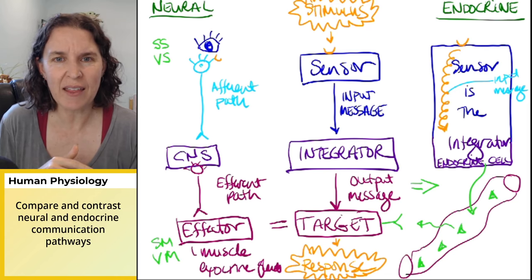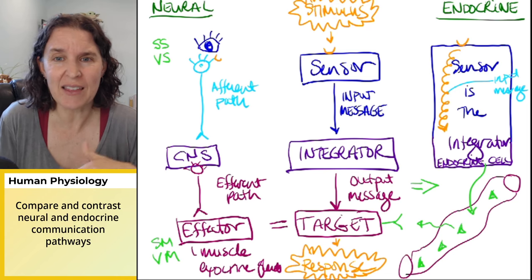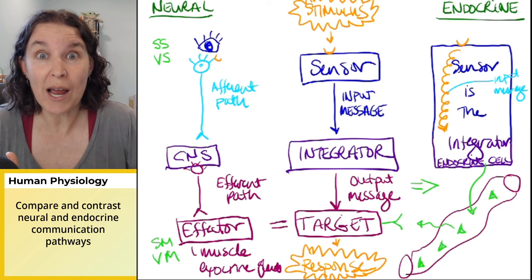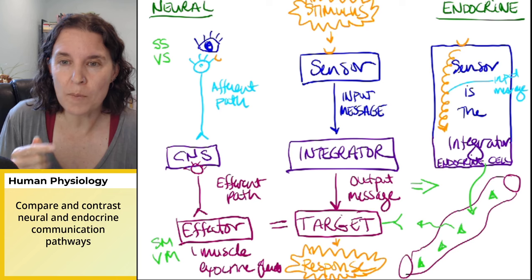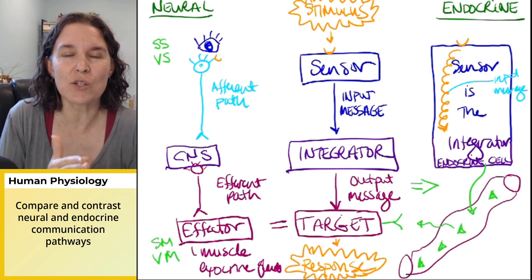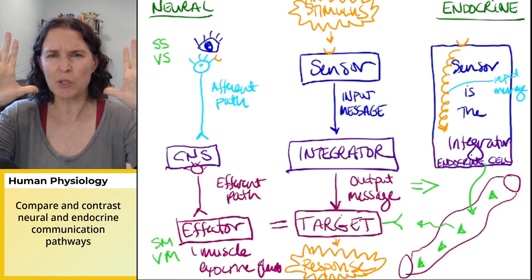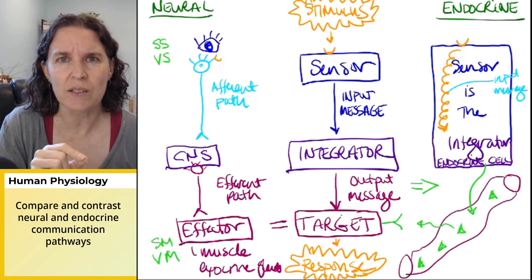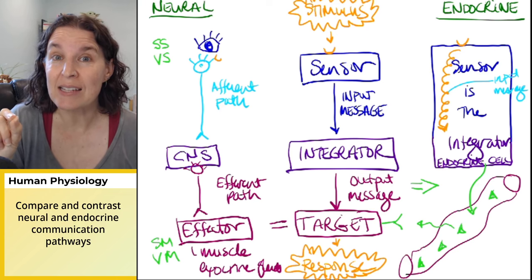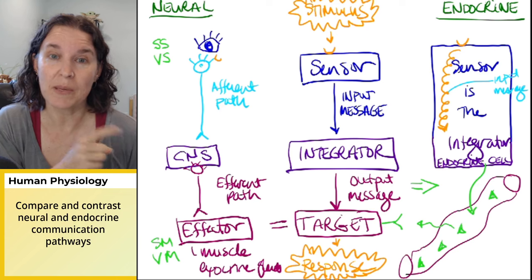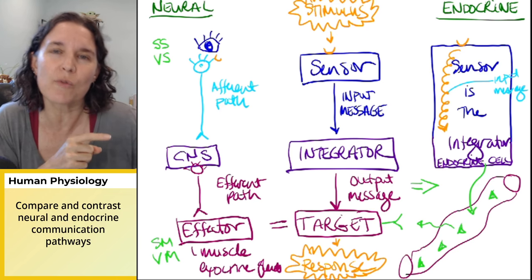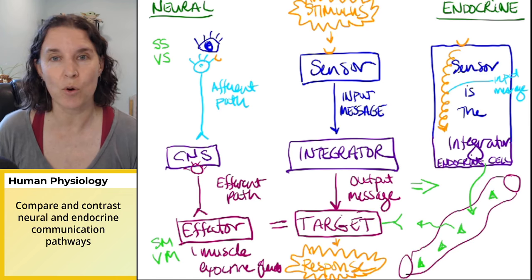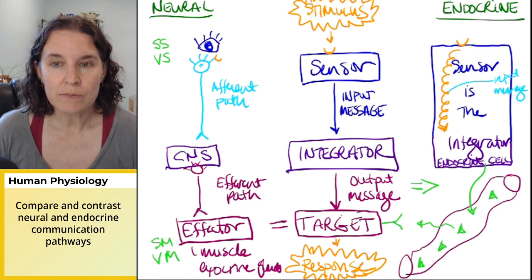The output message from an endocrine gland is a hormone. Is it an efferent path? No, it's not, because an efferent path is a neuron. But it's an output message, and an efferent path is also an output message. That hormone tells someone else to do something. This is the mind-blowing part of endocrine gland as integrator. Endocrine gland as I'm telling other people what to do because I'm telling them to do something through my hormones. I'm making hormones that will tell them what to do. That way I don't have to deal with it anymore.